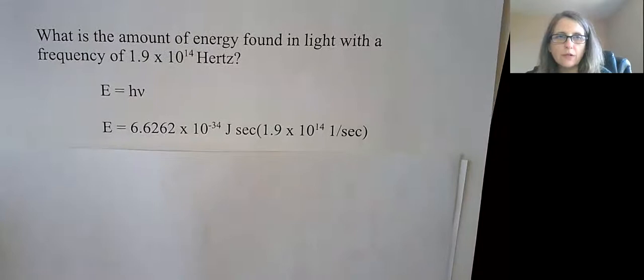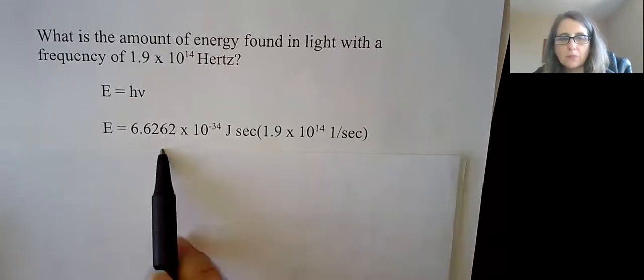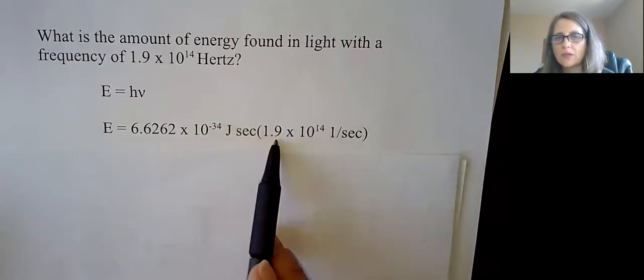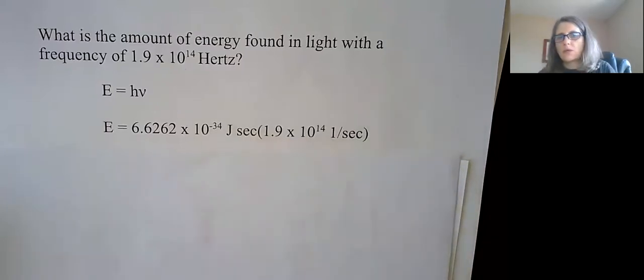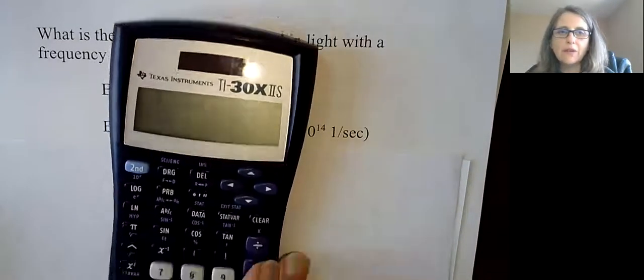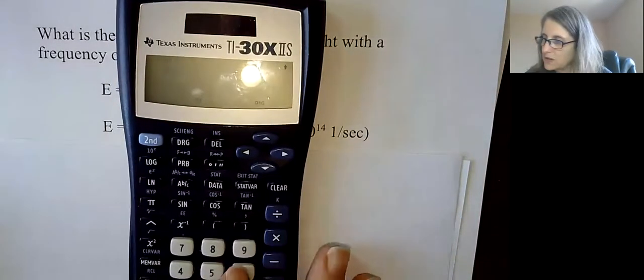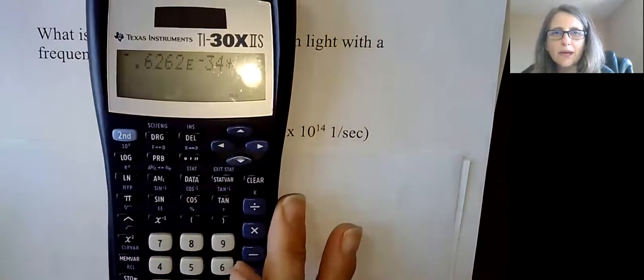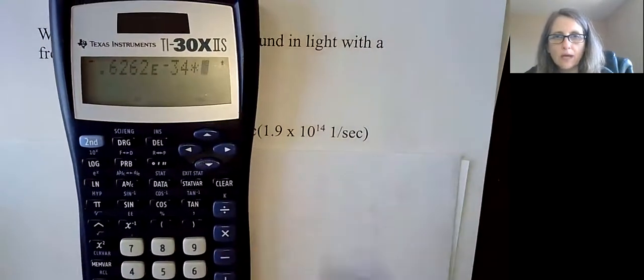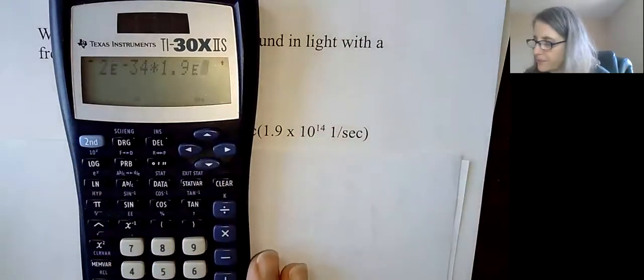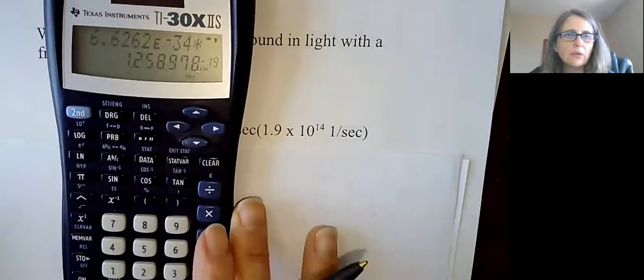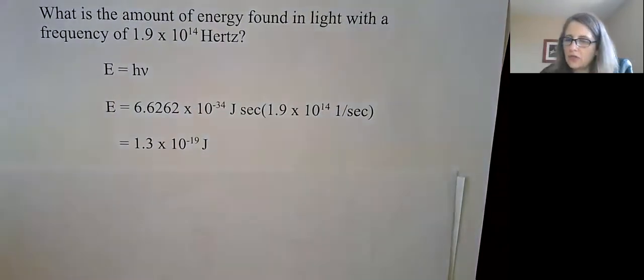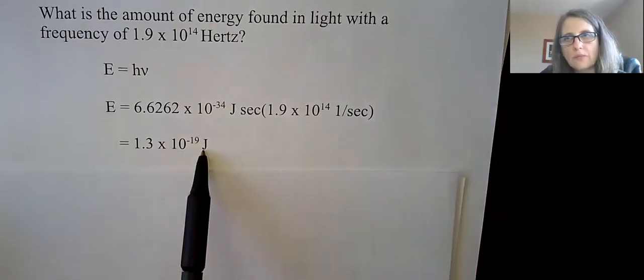We have energy equals Planck's constant times frequency. So I'm going to take 6.62 times 10 to the negative 34th joule seconds and multiply it by 1.9 times 10 to the 14th. This is where your double E function on your calculator is going to be very helpful. Take 6.6262, second function E, negative 34, and then multiply it by 1.9, second function E, 14. And it should give you 1.3 approximately times 10 to the negative 19th, and the energy is going to be in joules.